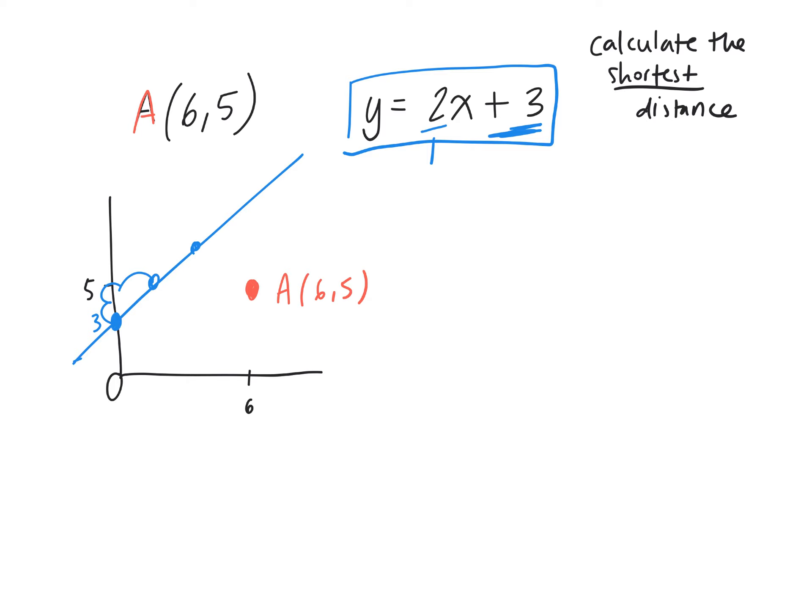We're trying to find the shortest distance from point A to the blue line. If I want to calculate the distance from point A to the y-intercept, we can do that using the length of a line segment formula, right? But that's not the shortest distance.